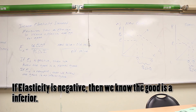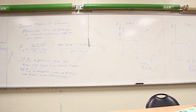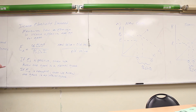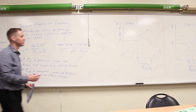If the income elasticity is negative, the good is an inferior good. This matters to economists and firms: if you sell spam, it's important to know how income affects demand. If the economy goes into a recession, demand for spam increases — it's a counter-cyclical commodity. Conversely, economic growth and rising incomes would reduce demand for it.